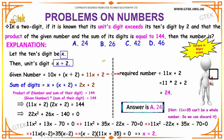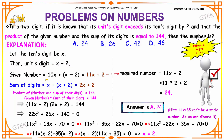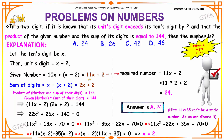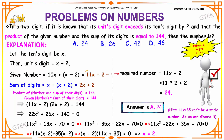It is given that the product of the given number and the sum of the digits is equal to 144. So, we have the given number, that is nothing but the tenth digit multiplied by 10, that is 10x, plus your unit digit, that is x plus 2, which is equal to 11x plus 2. Hence, your given number is nothing but 11x plus 2.